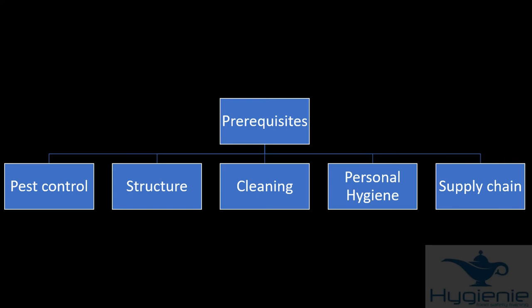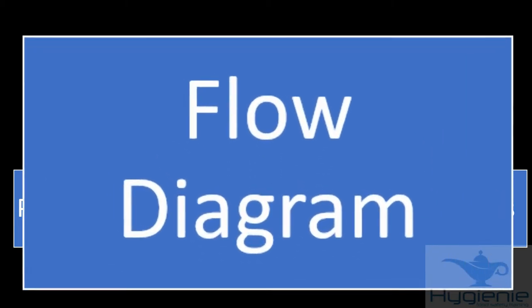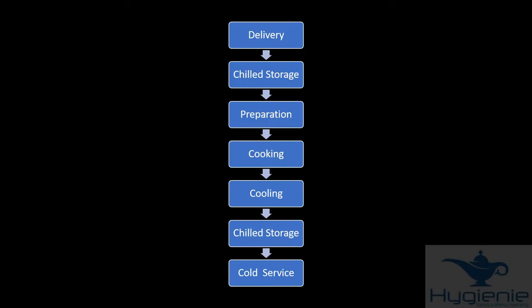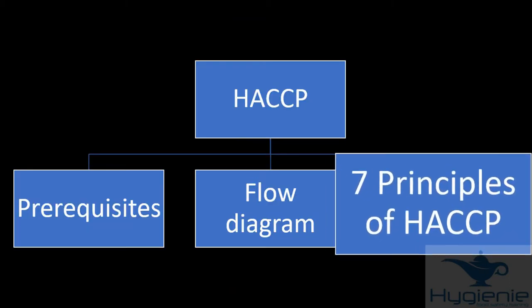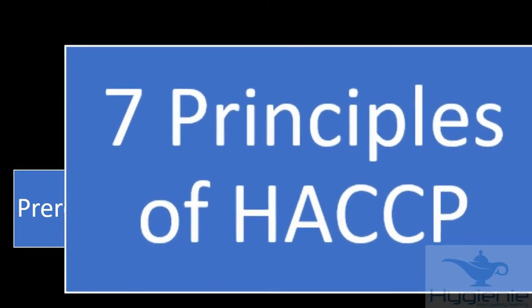That completes our look at prerequisites. Next we'll take a look at the flow diagram. A flow diagram is a pictorial representation of all the steps in your food production process. Now let's take a look in detail at the main elements of this video, the seven principles of HACCP.